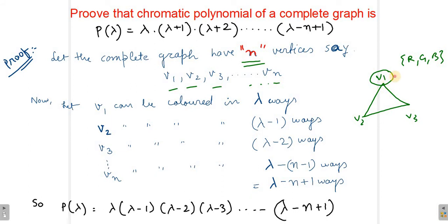So we have three ways in which we can color this v1. Similarly, if there are n vertices and lambda number of colors, the first vertex can be colored in lambda number of ways. Now v2...